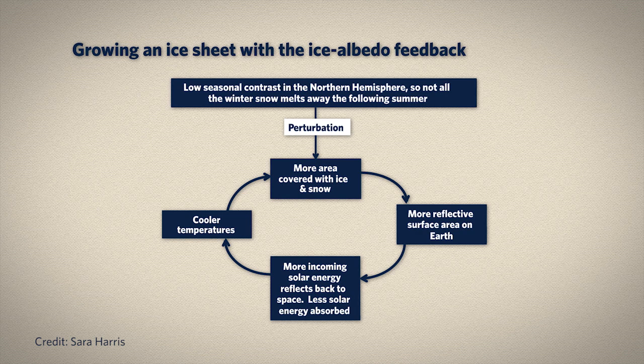This is the ice albedo feedback that we saw earlier. It's an amplifying feedback — one that pushes the climate system in the same direction as the initial perturbation. In this case, the perturbation is toward cooling, so the ice albedo feedback keeps promoting cooling. Imagine what happens if the perturbation is toward less area covered with ice and snow — it still turns out to be an amplifying feedback, just pushing in the opposite direction. Feedbacks like the ice albedo feedback are crucial for explaining the amplitude of these climate cycles over the past million years.